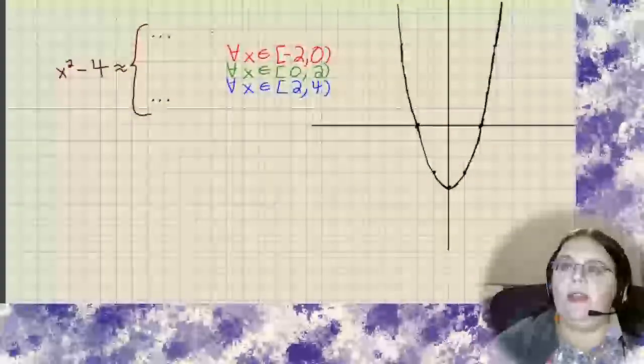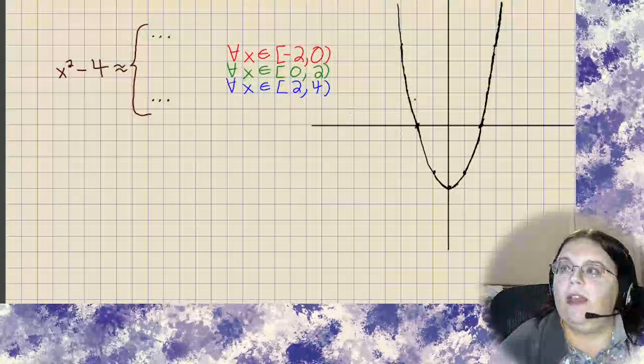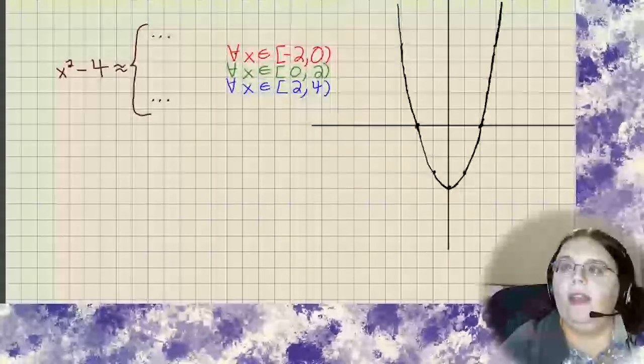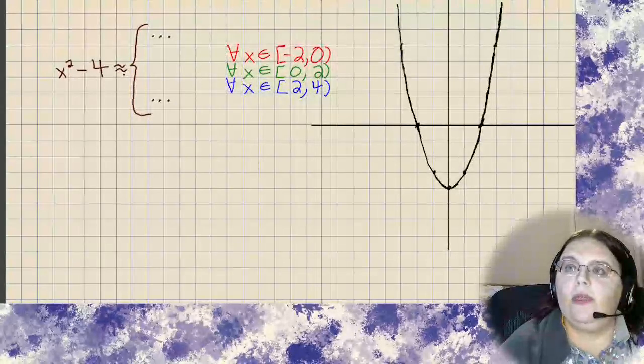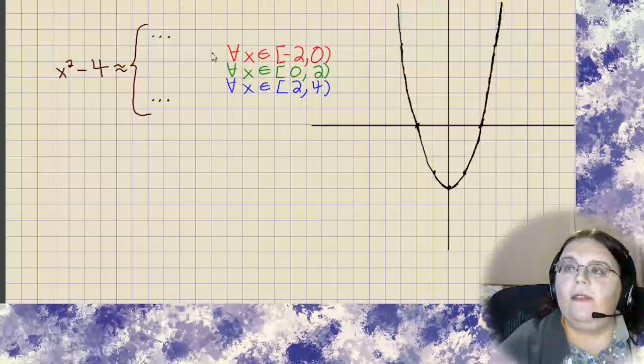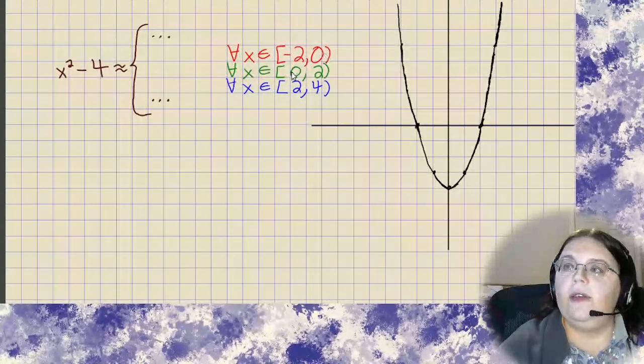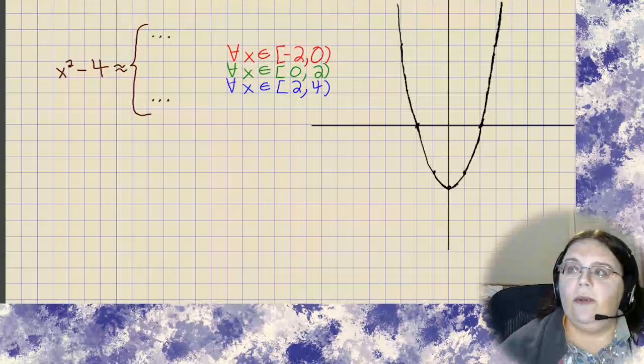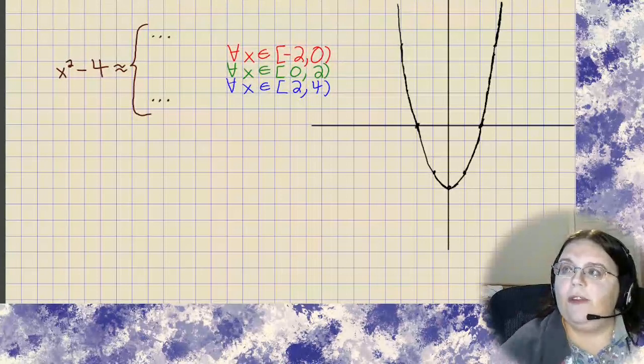So here I'm working with x squared minus 4, and I drew out a rough sketch of it. And I want to come up with pieces for three subdomains. The subdomain for all x values from negative 2 to 0, from 0 to 2, and then from 2 to 4. I could do more. We could extend this as far as we want to.